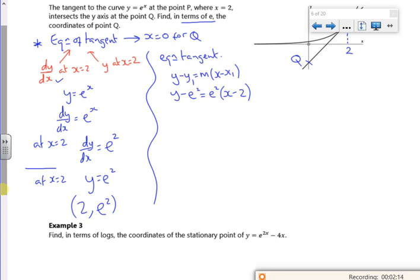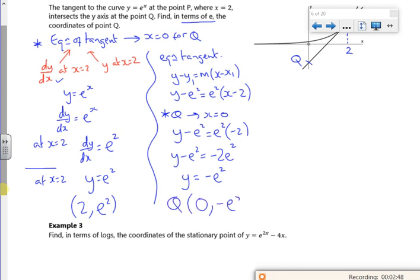Now what I want to do is where it crosses Q, or where Q is, which is where x is 0. So if x is 0, I've got y minus e squared is e squared times nothing minus 2. So I've got y minus e squared is minus 2 lots of e squared. So you've got to be happy that e squared is just like x. So I can do all the algebra with it. So if I add on an e squared, I've got minus e squared.